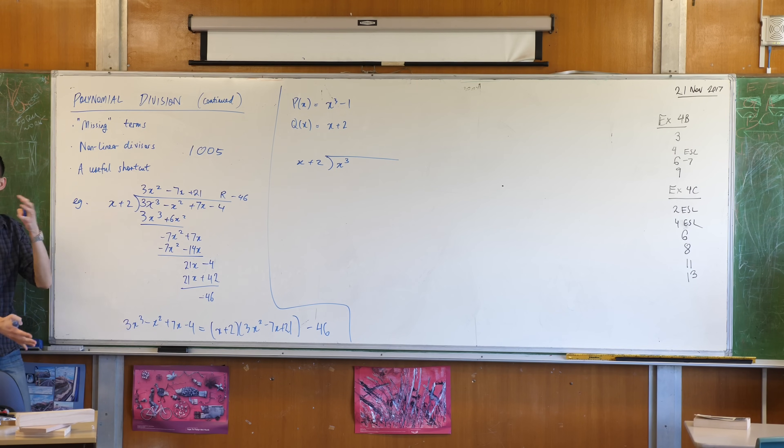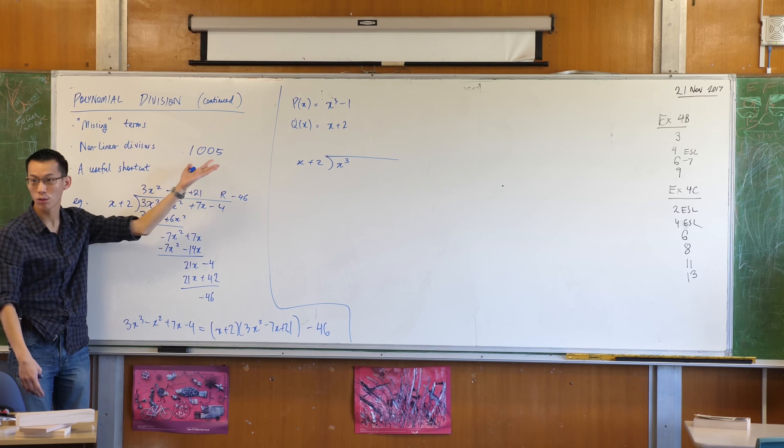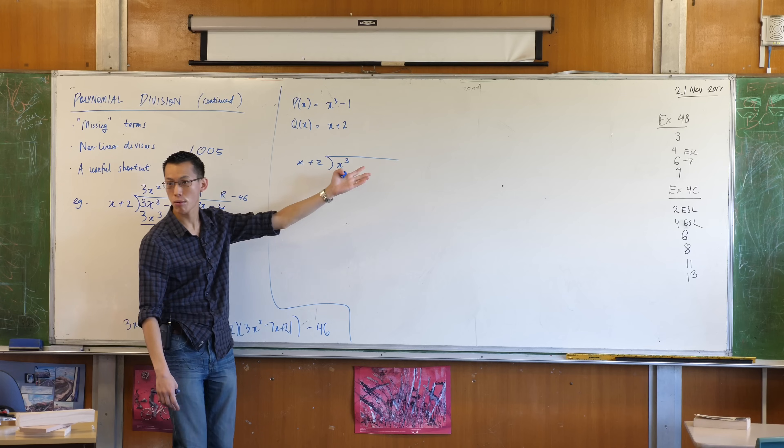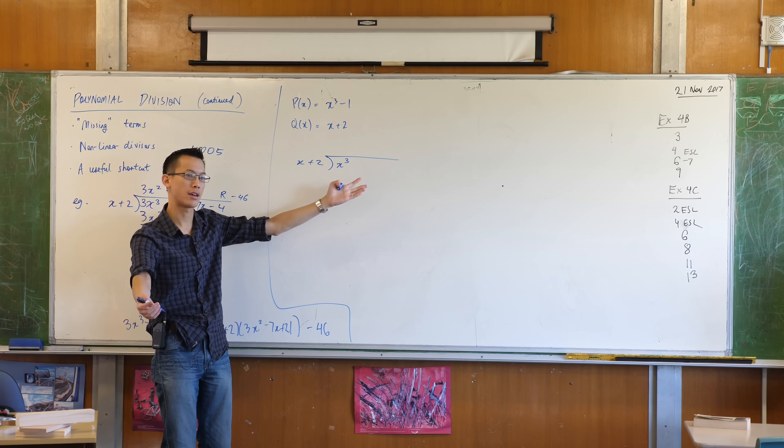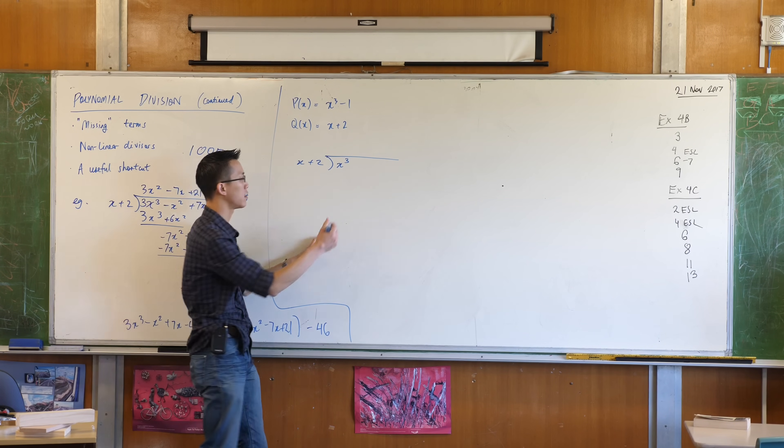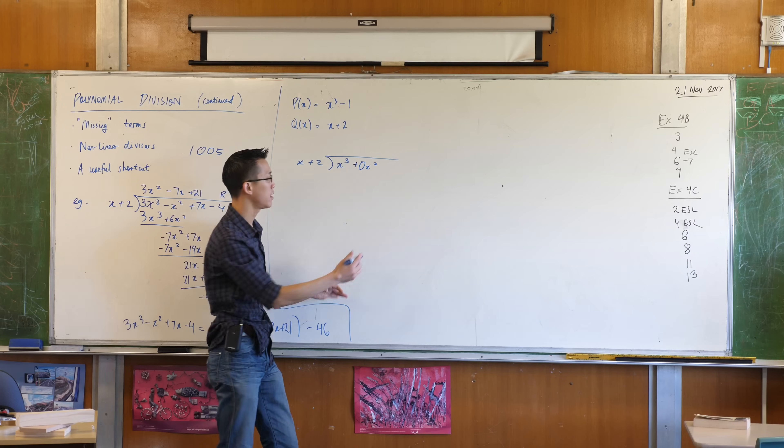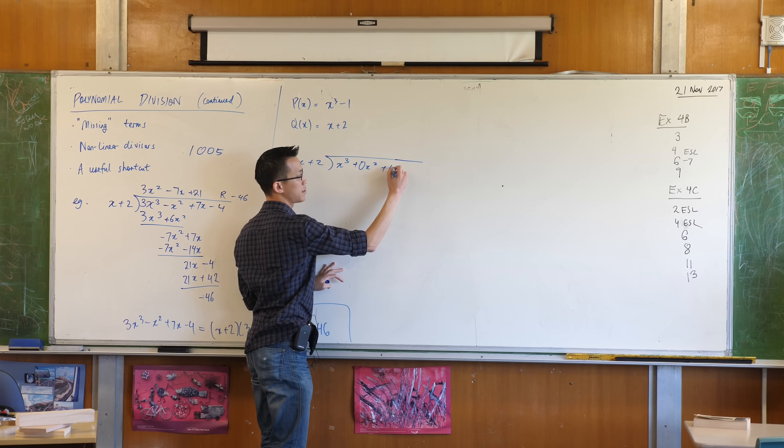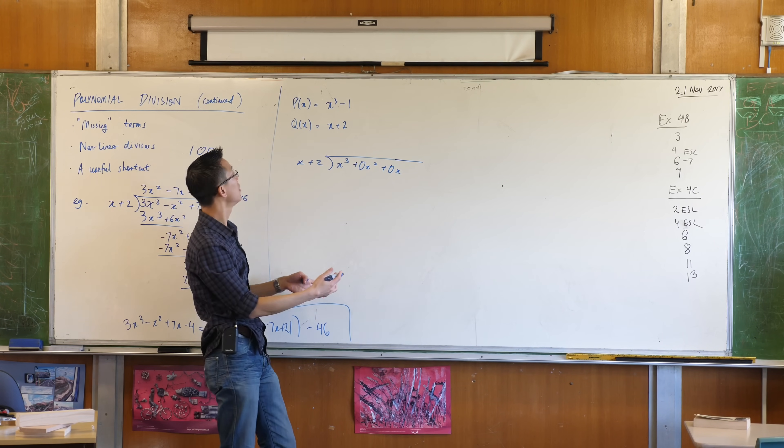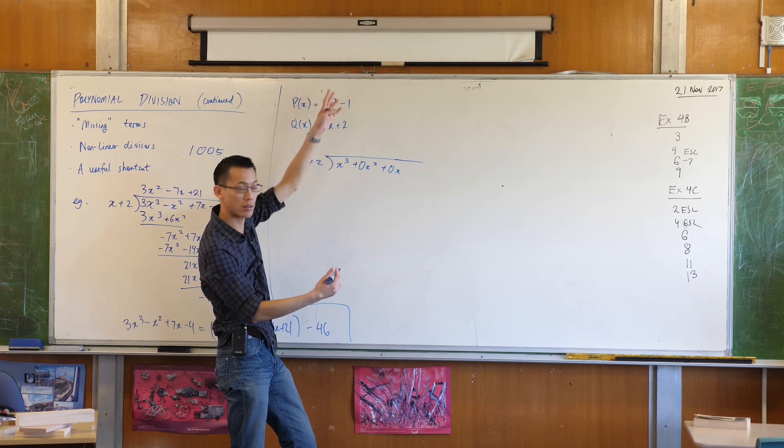Now, because polynomial long division is built on numerical long division, we end up with the same problem over here. How many x squared terms are there? There are none. So you have to say that there are none, right? How many x terms are there? And the answer is, there are none. And then there's the minus one, there's a constant.